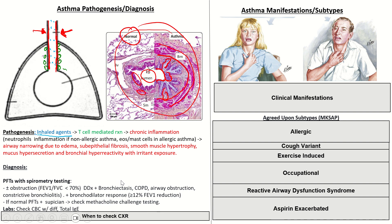Methacholine challenge testing evaluates reversible bronchoconstriction in response to a muscarinic agonist irritant, and can make the diagnosis of asthma in patients who don't show an obstructive deficit on standard PFTs and haven't yet developed significant chronic remodeling.